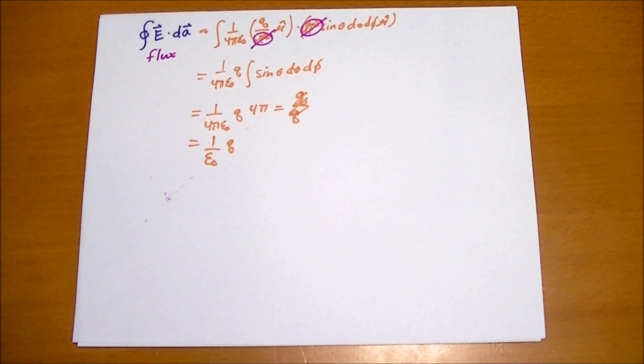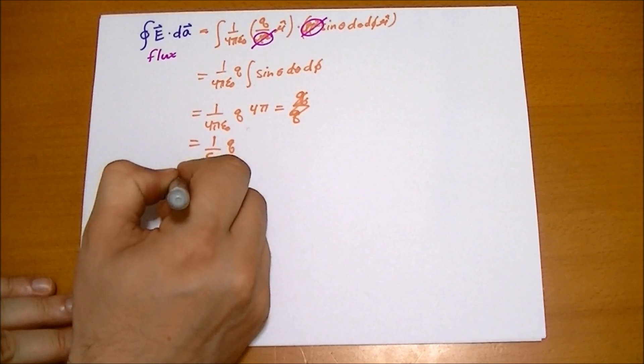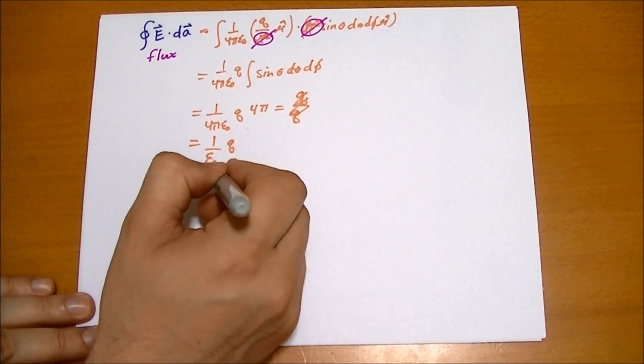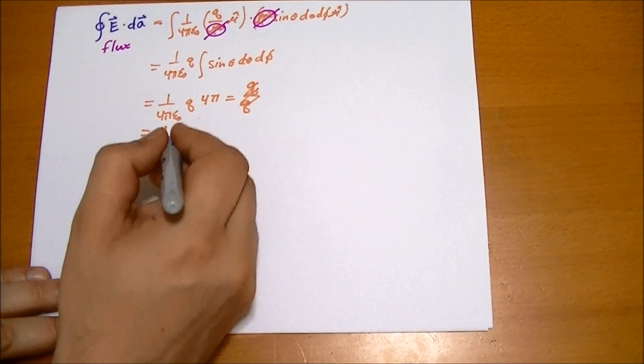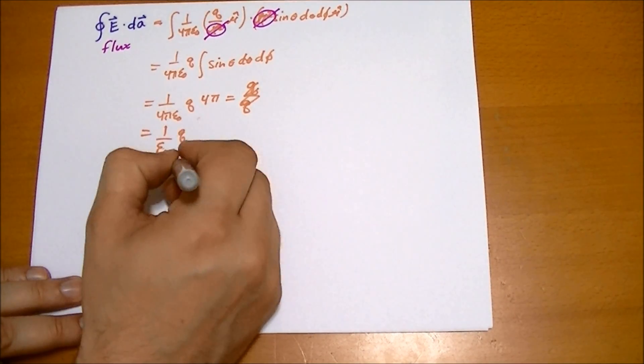we can write this equation out. We can say the flux through any surface of E vector dot dA is always going to be equal to the sum of the various surfaces that you can use.